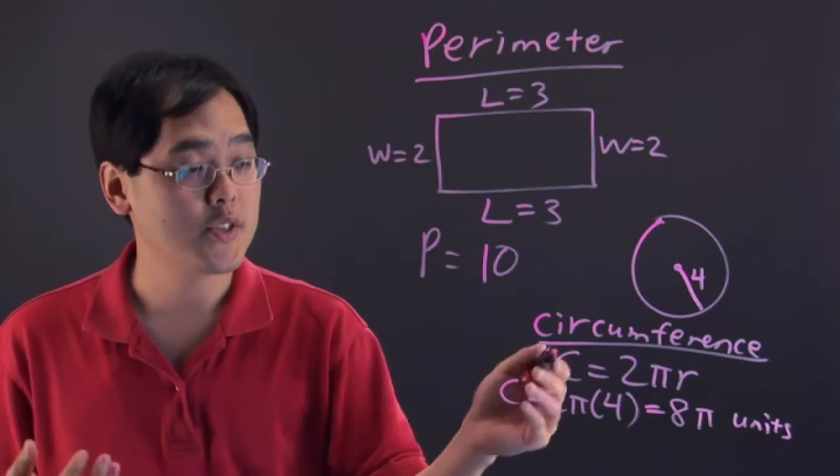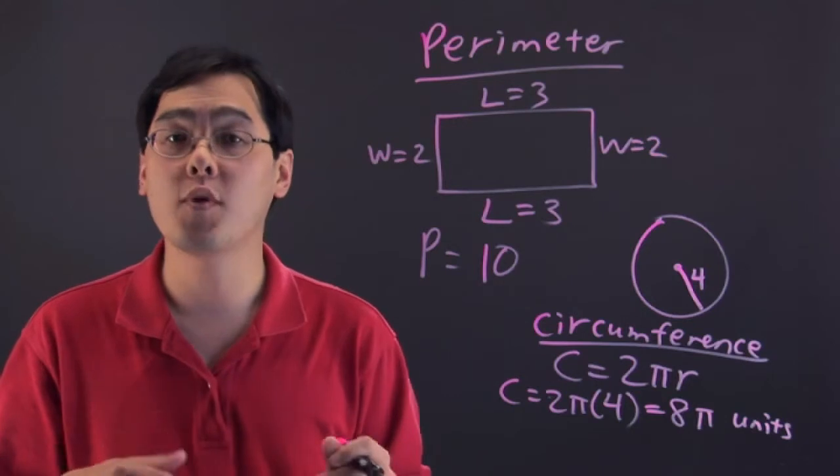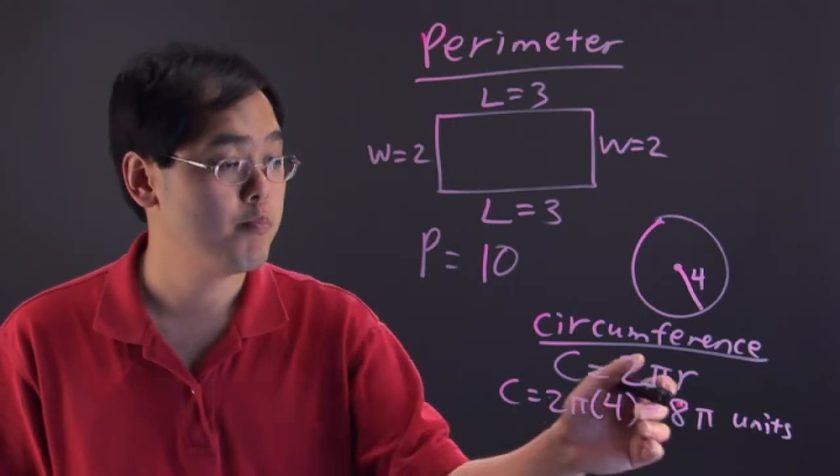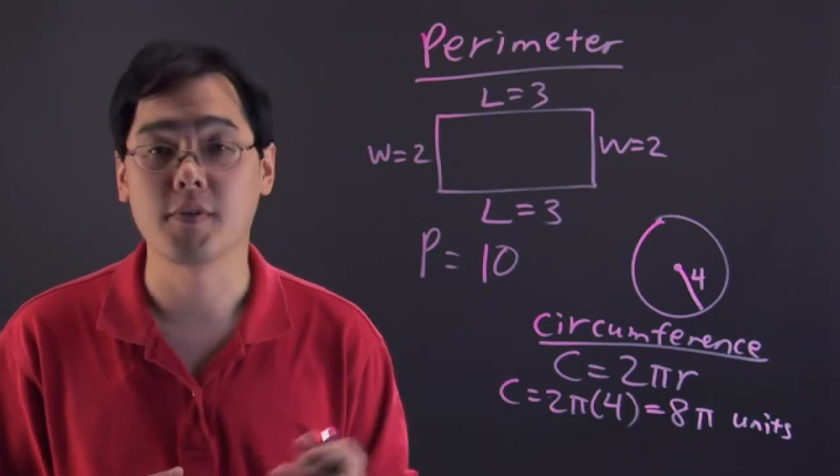But, that means the circumference of this circle is going to be 8 pi units. Now, you can leave it in pi or if you want to find an approximation, just either do 8 pi on your calculator or if you want to do 3.14, that's perfectly fine too.